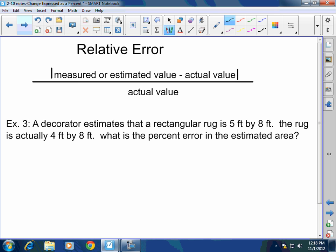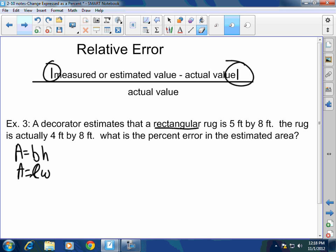So, let's figure out what we got here. A decorator estimates that the rectangular rug is five feet by eight feet. The rug is actually four feet by eight feet. What is the percent error in the estimated area? So, first thing, what's the formula for area of a rectangle? Length times width or base times height either way. Are those absolute value? Yes, this is absolute value. These guys here are absolute value, yes.